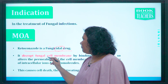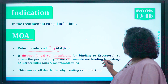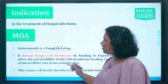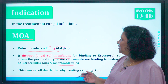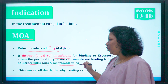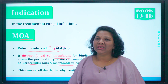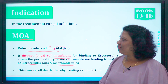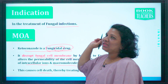It disrupts the fungal cell membrane by binding to ergosterol, which alters the permeability of the cell membrane, leading to leakage of intracellular ions and macromolecules. This causes cell death, thereby treating fungal infections of the skin. This is the mechanism of action of ketoconazole as a fungicidal drug, and that is why it is given in fungal infections.